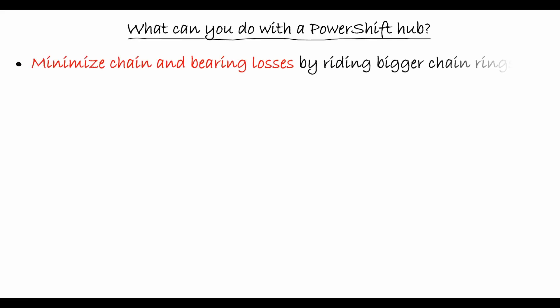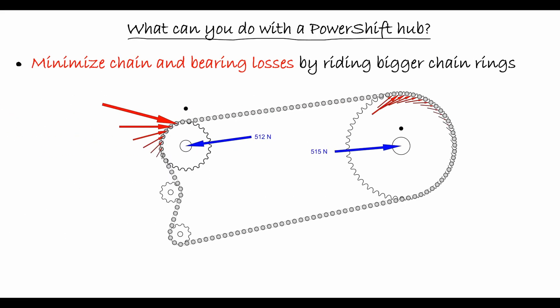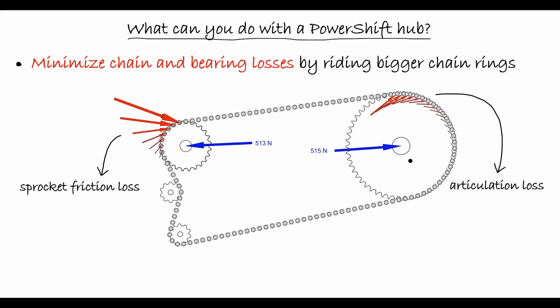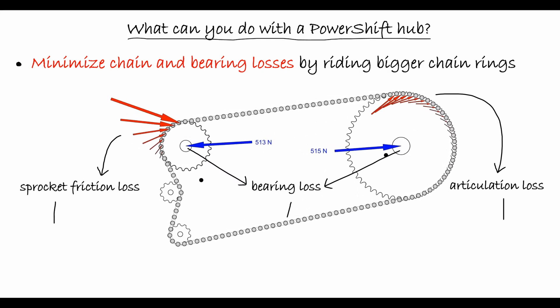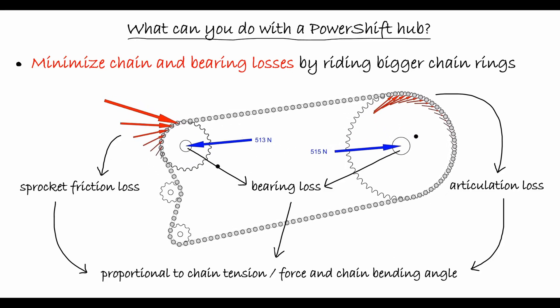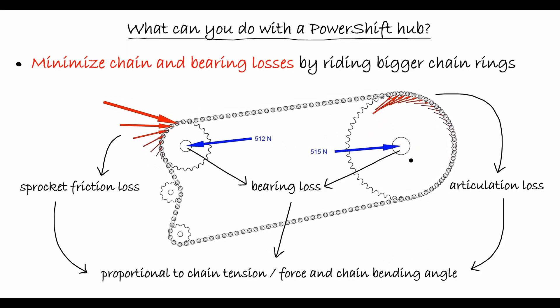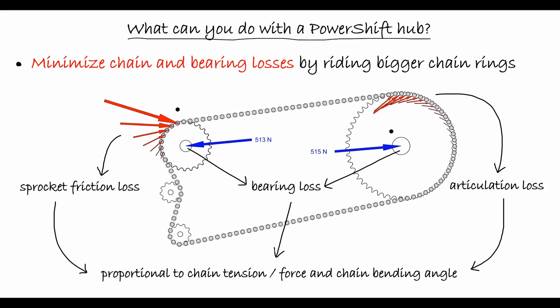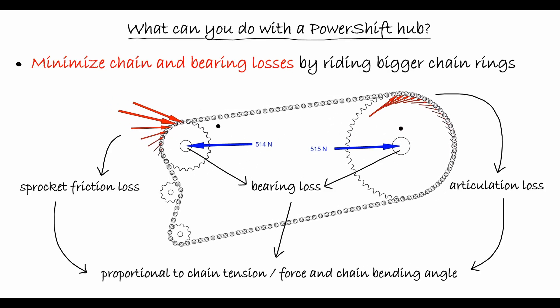A further advantage of the PowerShift Hub is that it can be used to minimize chain and bearing losses in the rest of the bicycle's drivetrain. These losses are known to be proportional to the amount of chain tension and chain articulation, that is, the amount the chain has to bend to wrap around the chainring. Both chain tension and chain articulation increase as the size of the chainring decreases, and vice versa.